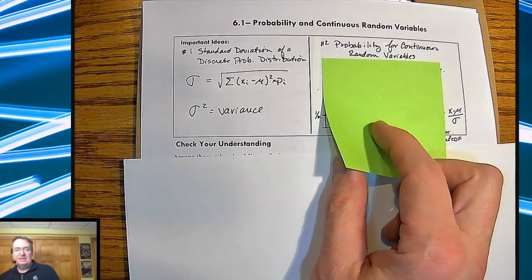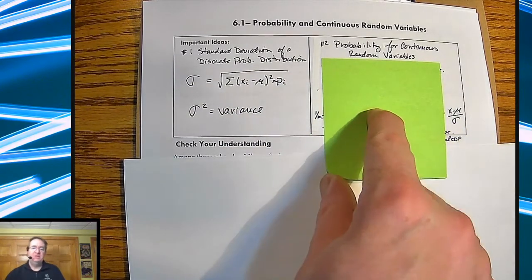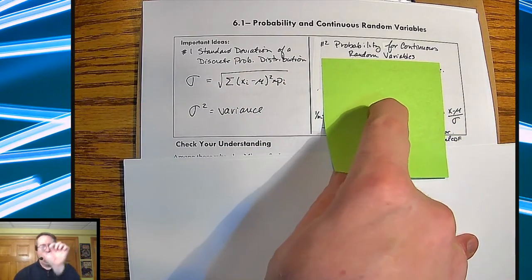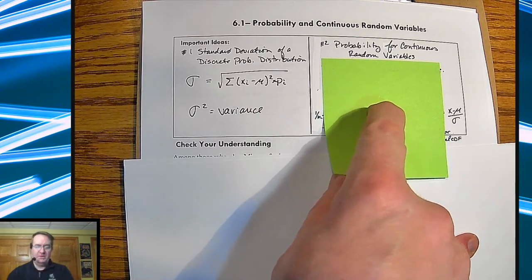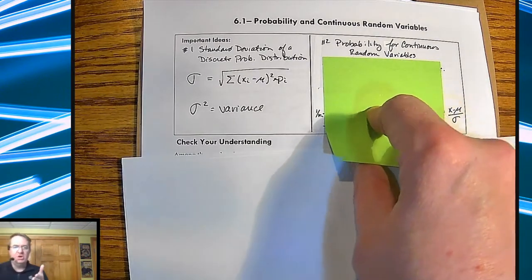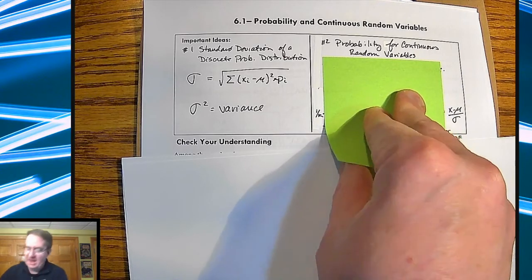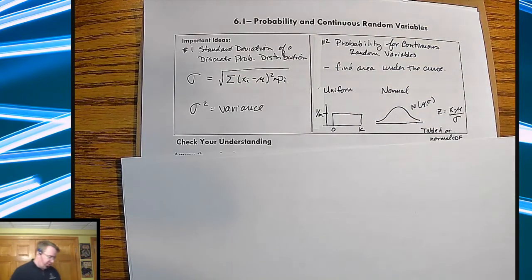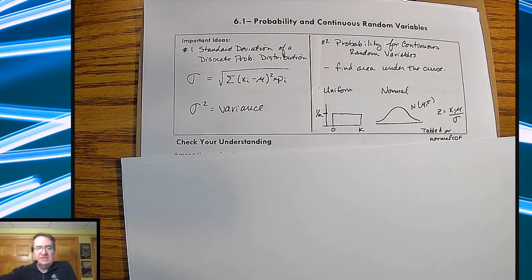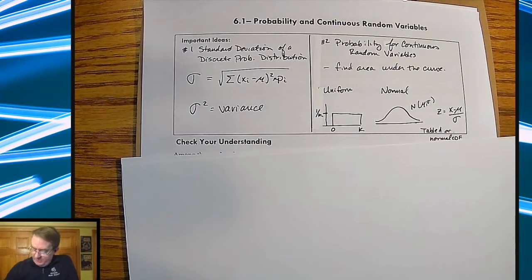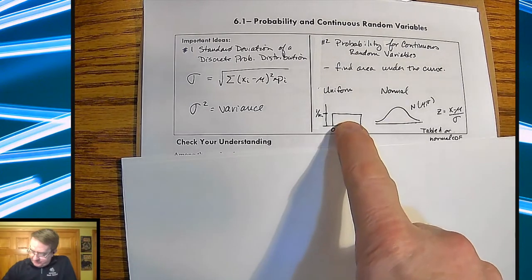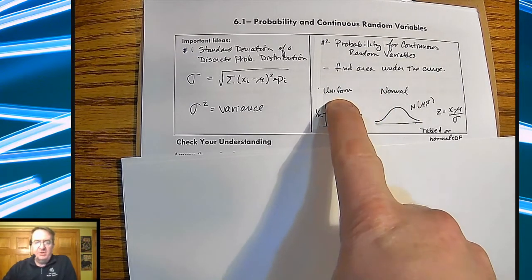For probability for continuous random variables, because they're continuous, no matter what two numbers you have, you can always go in between them. You can always go half. No matter what your distance, you can always cut it in half. And so because of that, you're going to find the area under a curve. If you've been through calculus, this will sound terribly familiar.